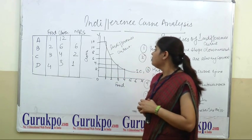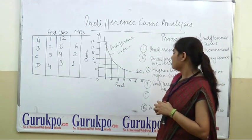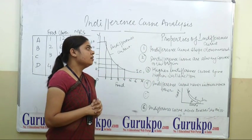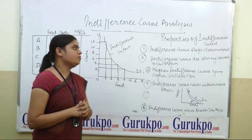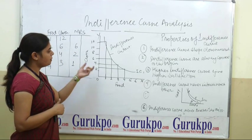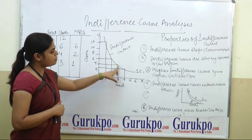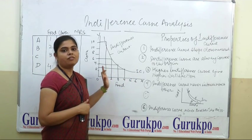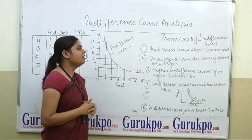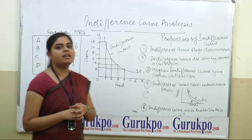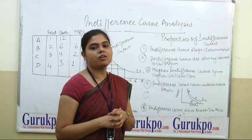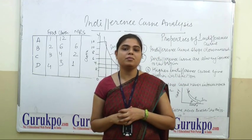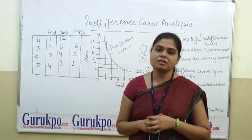There are various properties of the indifference curve. The first property is that an indifference curve always slopes downward — from left to rightward. The second property is that an indifference curve is always convex to the origin. The reason is that it follows the law of diminishing marginal rate of substitution.